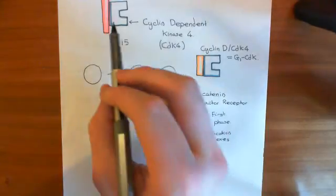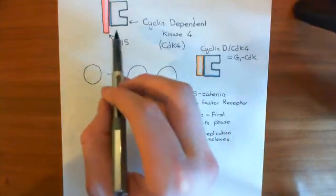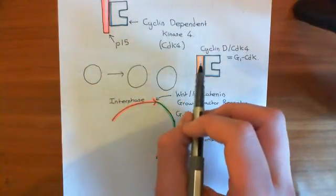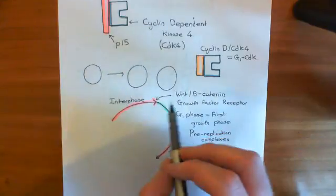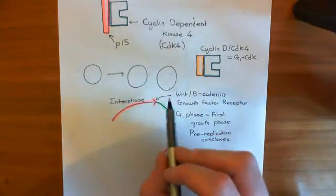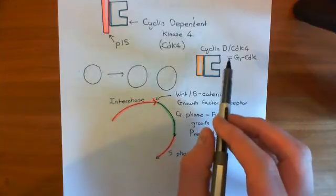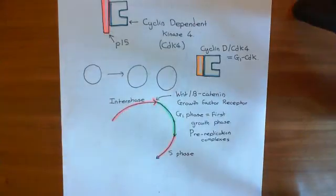P15 binds to the cyclin-dependent kinase 4 and stops cyclin-D from being able to bind to it. It's going to cause levels of cyclin-D-CDK4 complexes to go down. And when that happens, you're not going to be able to move from G1 to S. That checkpoint, you're not going to be able to overcome it. It's going to completely halt you in G1 phase and stop you replicating the DNA.